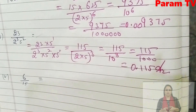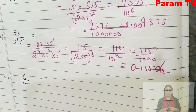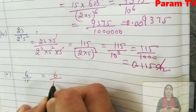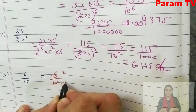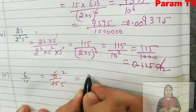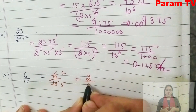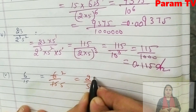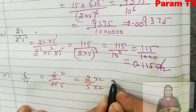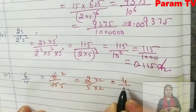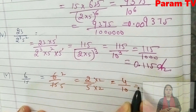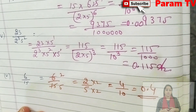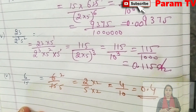Next is 6/15. First, bring it to standard form: 6/15 simplifies to 2/5. Now 5 × 2 = 10, so multiply by 2: this gives 4/10, which equals 0.4. That is the decimal expansion of this number.